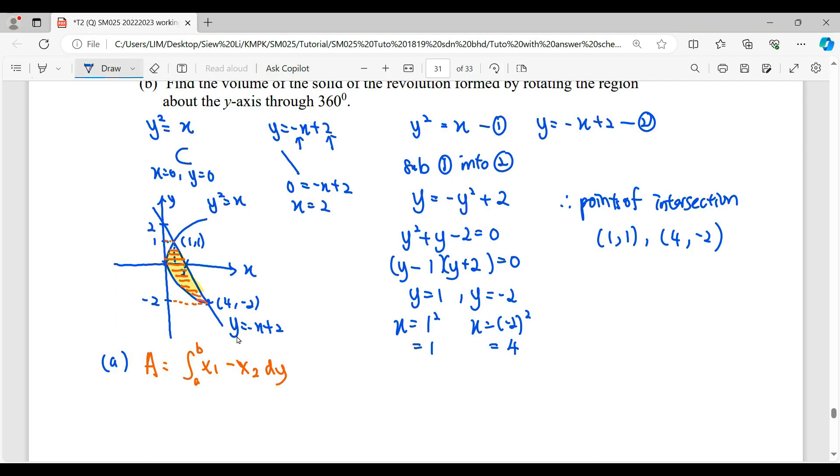Therefore, to find the area, we form out the formula, lower limit start from -2, upper limit start from 1. And then the right-hand side, so look at this area, the right-hand side graph, it will be our linear, which is y = -x + 2. So we express x as a subject, let this equation in term of y. So therefore, -y + 2.